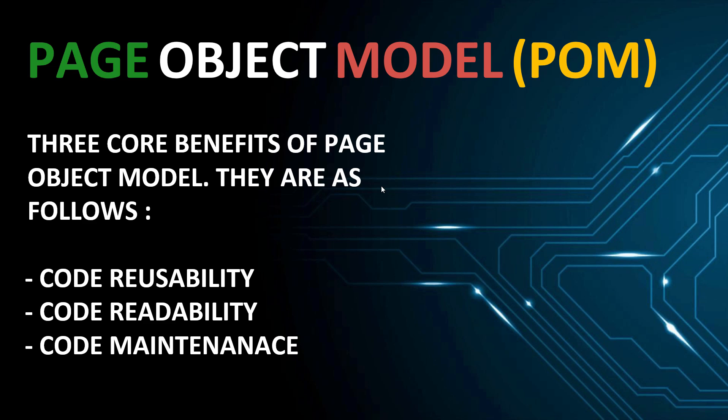Because we have three different files, reading the code is very easy. We know where our locators are, where our elements are, where our actions are, and how we are calling them in our test cases. Maintainability is also very easy — tomorrow if there is a change in a locator, you simply open the locator file, change the locator, and you are done.